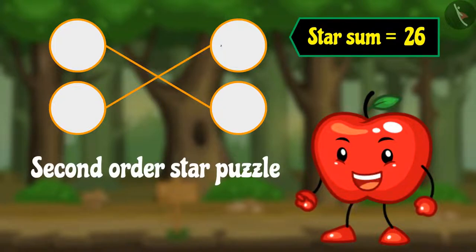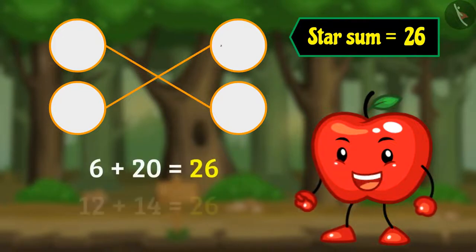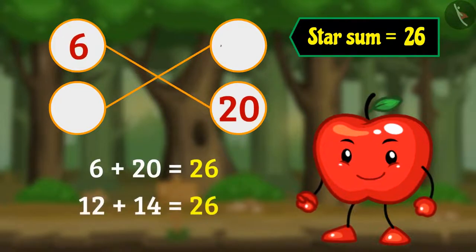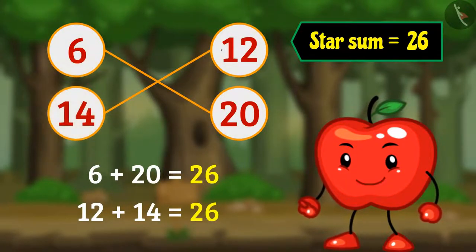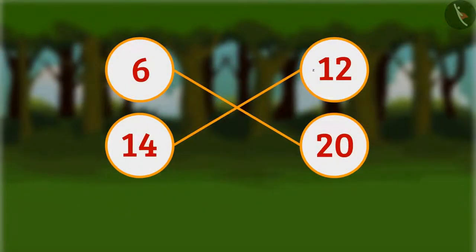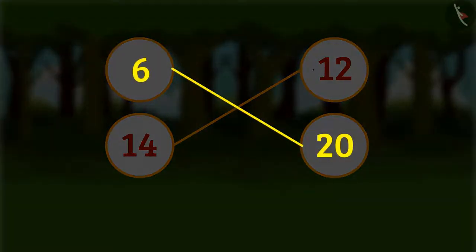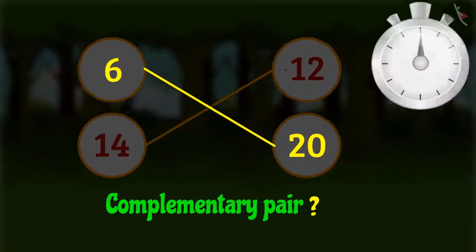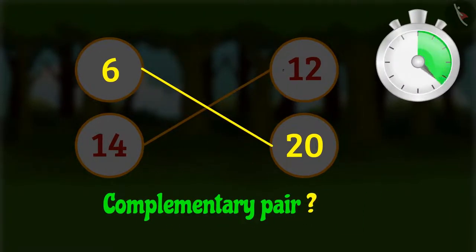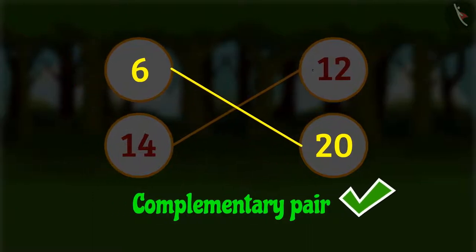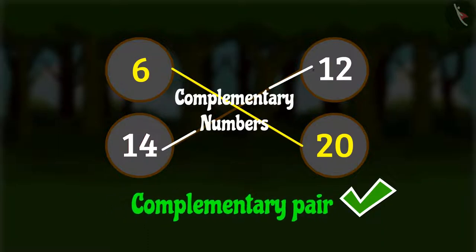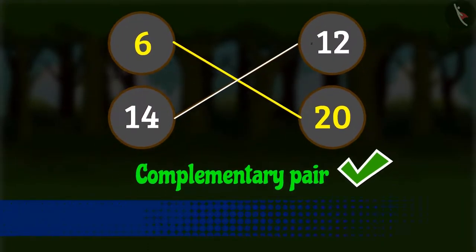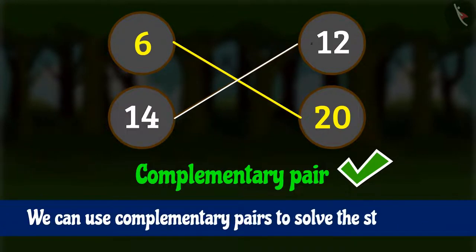26 can be expressed as the sum of two numbers in two ways like this. Hence in this manner we can fill the star. Have you observed that 20 and 6 form a complementary pair? Similarly, 12 and 14 also form a complementary pair. So we can use complementary pairs to solve the star puzzle.